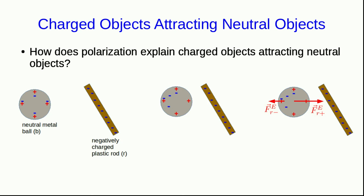And so, the repulsive force on the negative charges is smaller than the attractive force on the positive charges. As a result, the total electrical force that the rod exerts on the ball is an attractive force, because it's just the vector sum of the force on the positive charges and the force on the negative charges.